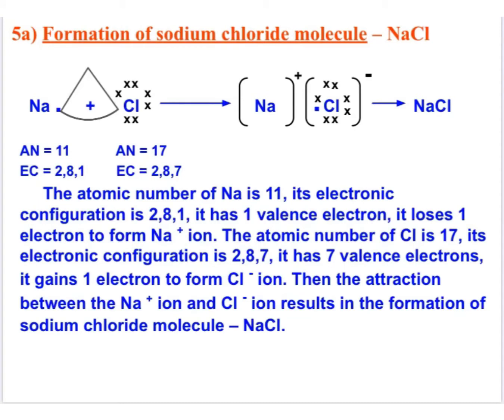The next topic is the formation of sodium chloride (NaCl), which is formed between the metal sodium and the non-metal chlorine. Sodium has one valence electron — one electron in its outermost orbit — represented by a dot near Na. Chlorine has seven electrons in its outermost orbit, represented by crosses around chlorine. This type of structure is known as an electron dot structure. Sodium, with configuration 2,8,1, loses one electron, and this electron is gained by chlorine in the formation of NaCl.